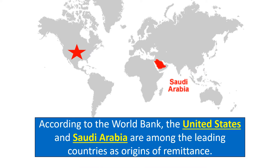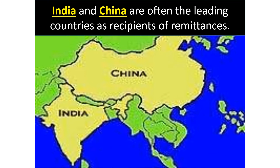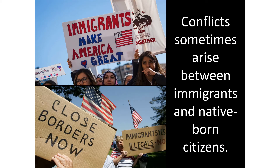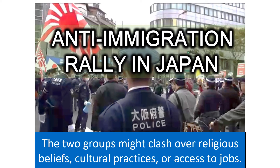According to the World Bank, the United States and Saudi Arabia are among the leading countries as origins of remittances, while India and China are often the leading recipients. While immigration is usually very good for receiving countries, it can also cause conflict between immigrants and native-born citizens — over religious beliefs, cultural practices, or access to jobs.